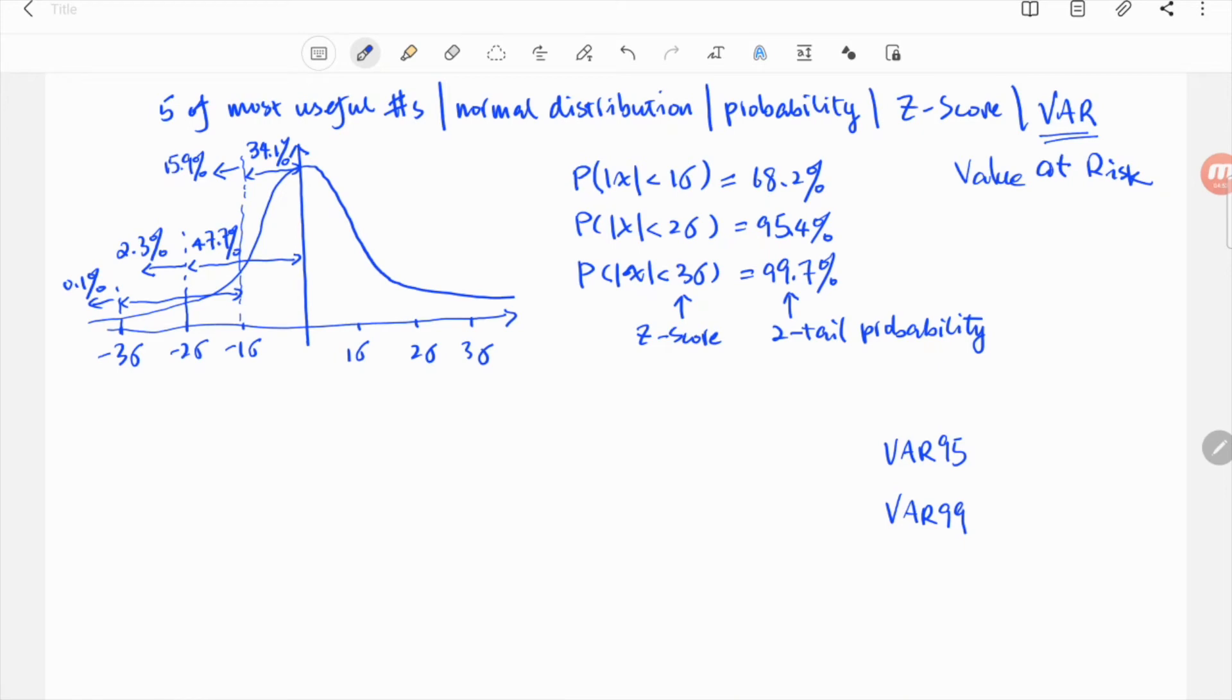Value at risk is the loss your portfolio would suffer at a given probability. For 195, it's the loss at 5% probability. For 199, it's 1%.